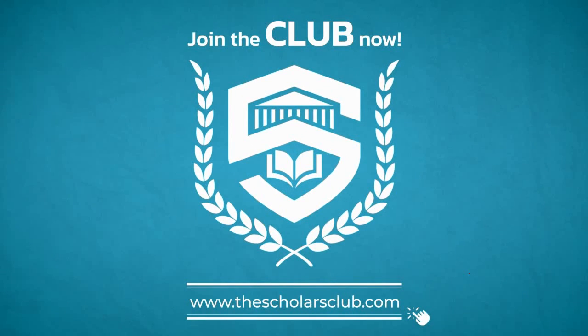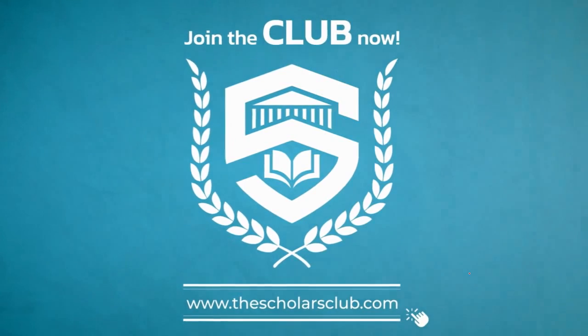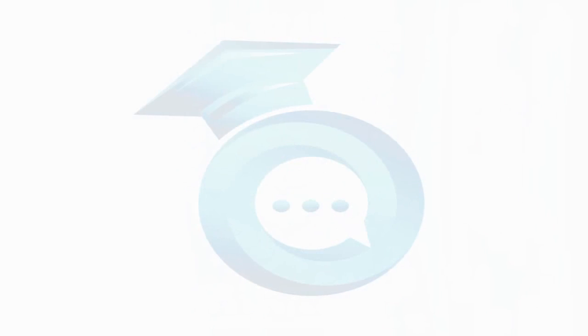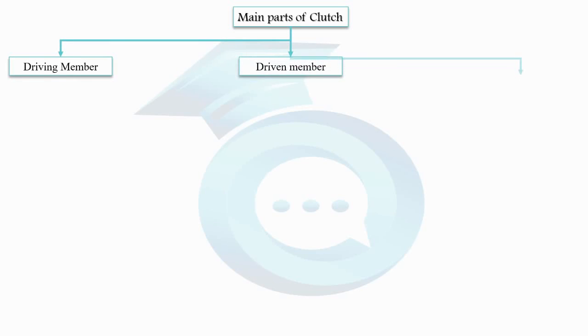Now, coming back to our lecture, let's explore the key components that make up a clutch system. Understanding these parts is crucial to gaining a comprehensive grasp on how clutches function. The clutch comprises three key elements: a driving member, a driven member, and an operating member. Allow me to break down each of these components for you.